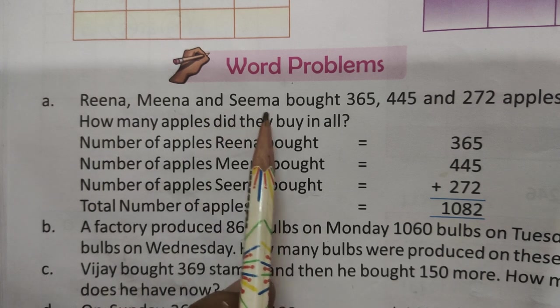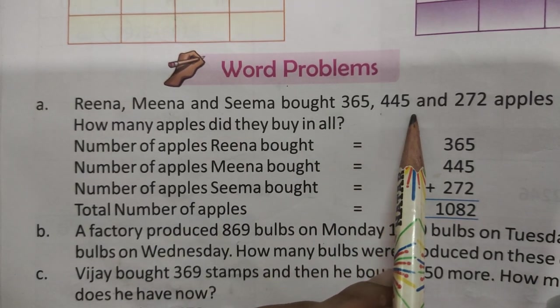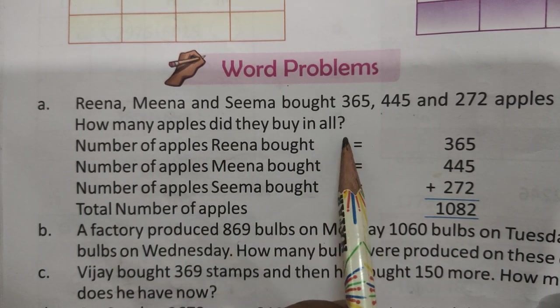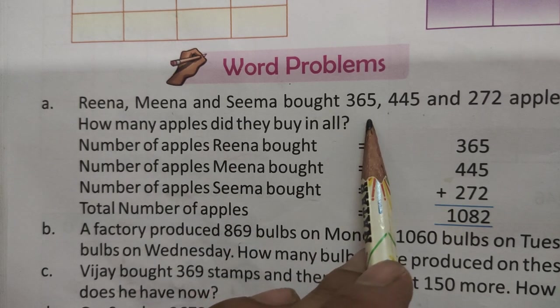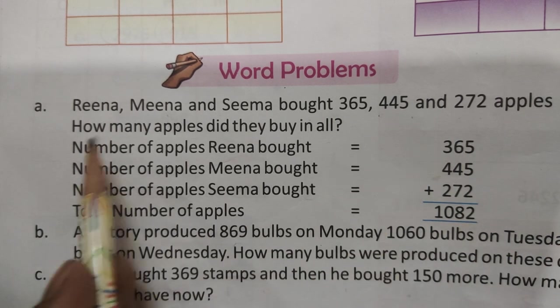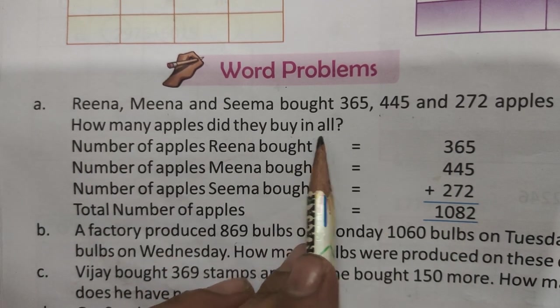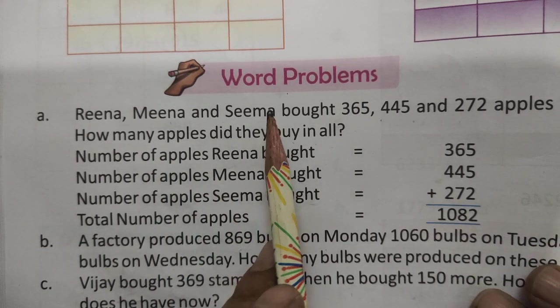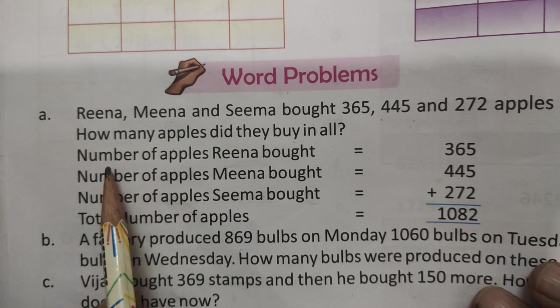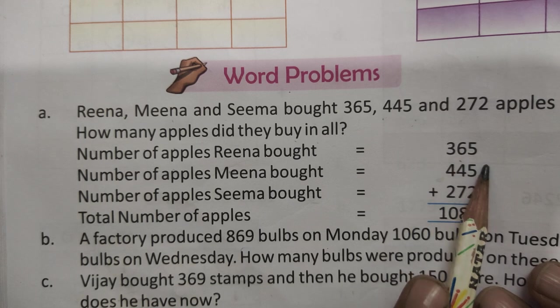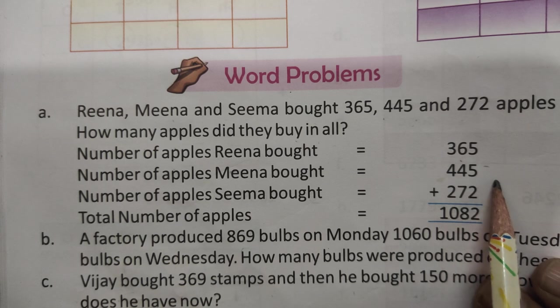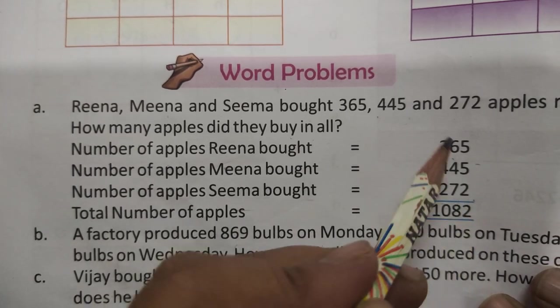Previous video mein maine aapko questions karwaya tha. Reena, meena and seema bought 365, 445, 272 apples. How many apples did they buy in all? Reena, meena and seema bought 365, 445, 272 apples respectfully. How many apples did they buy in all? Number of apples is 365, number of apples is 445 and seema 272.